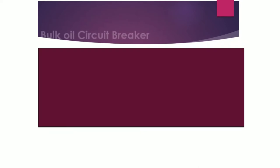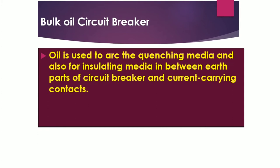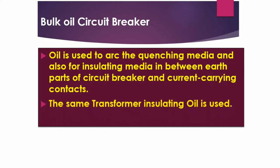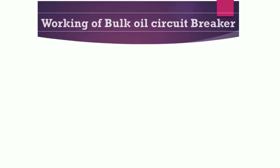The bulk oil circuit breaker uses transformer oil both as the arc-quenching medium and as insulating medium between the arc parts of the circuit breaker and the current-carrying conductors. The same transformer insulating oil is used in this type. It is used for voltage levels at or above 400 kV.